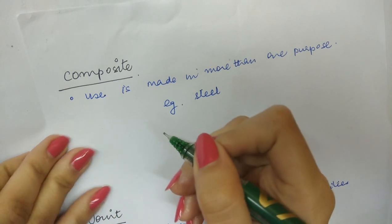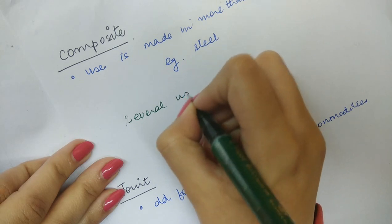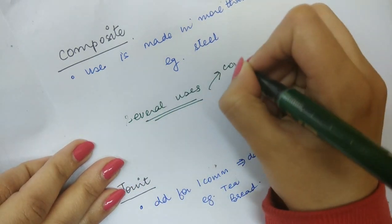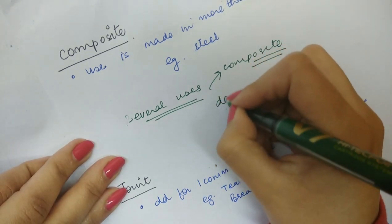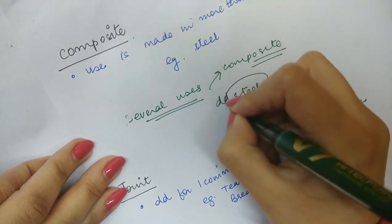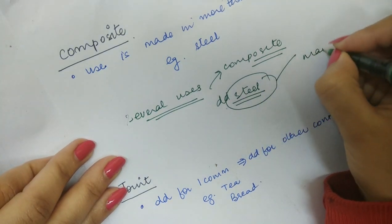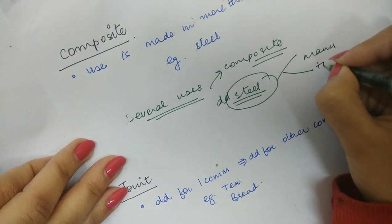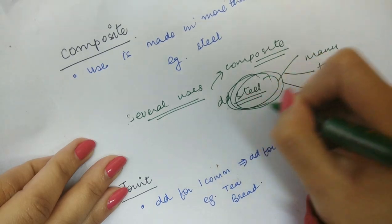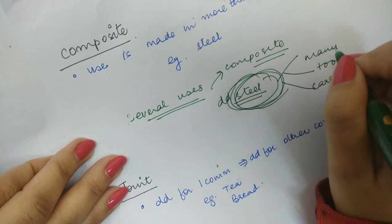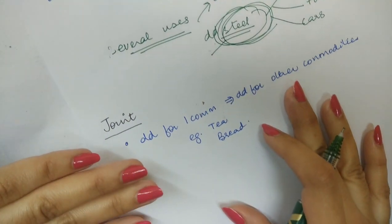Now let us move on to composite demand. When a commodity can be put to several uses, it is said to possess a composite demand. For example, the demand for steel is a composite demand because steel can be used for manufacturing machines, can be used as a tool, and can be used in cars. So this commodity, steel, can be put to several uses, and therefore it is said to have a composite demand.